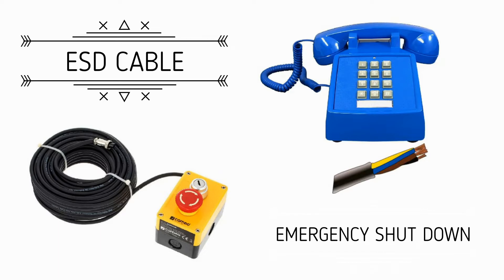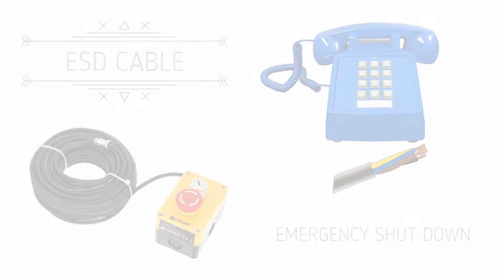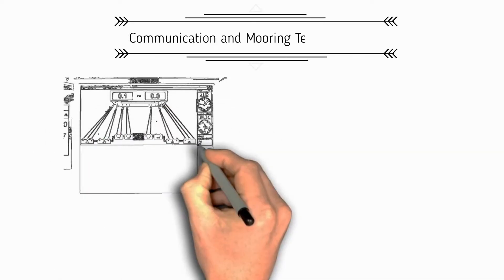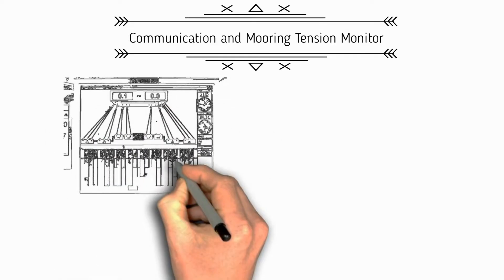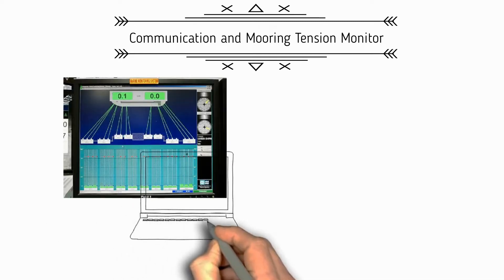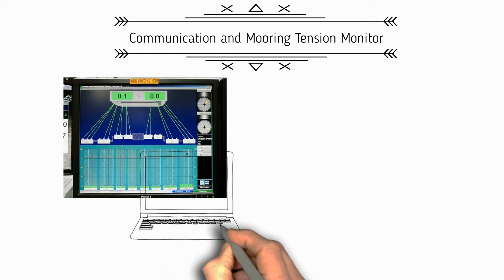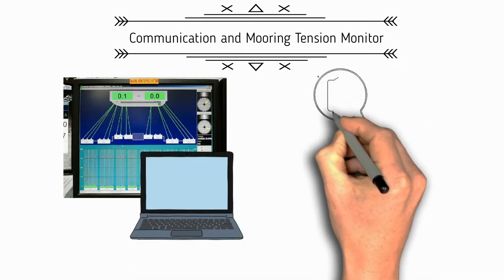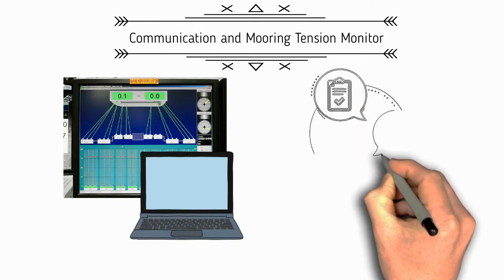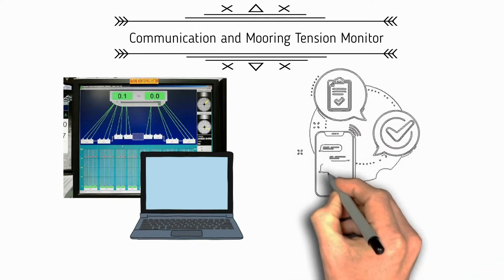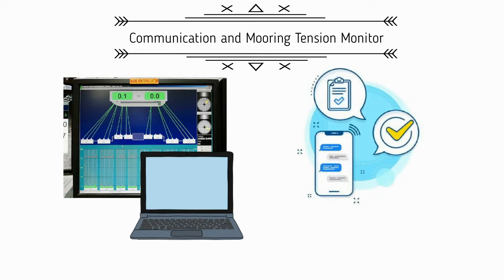Next is communication check and mooring tension monitor. This is an electronic system that monitors the tension of the mooring ropes, usually a laptop provided by the terminal, allowing us to know which mooring line needs adjustment. Communication check simply tests the telephone communication between terminal and ship — the ESD cable connection is also used for this telephone communication.